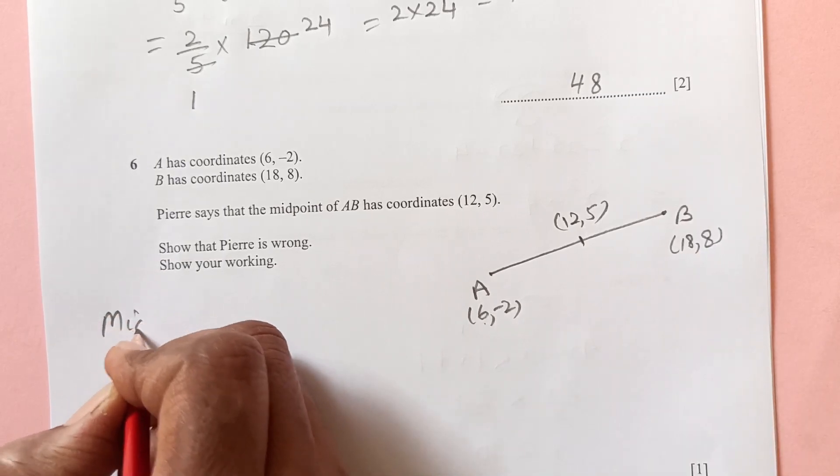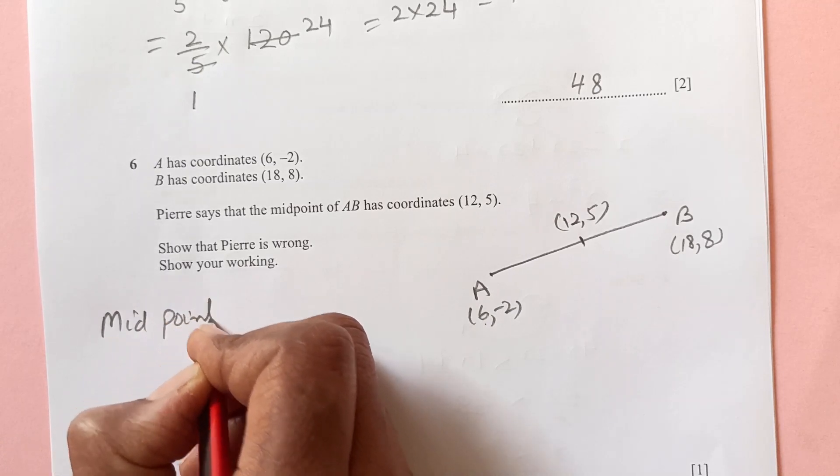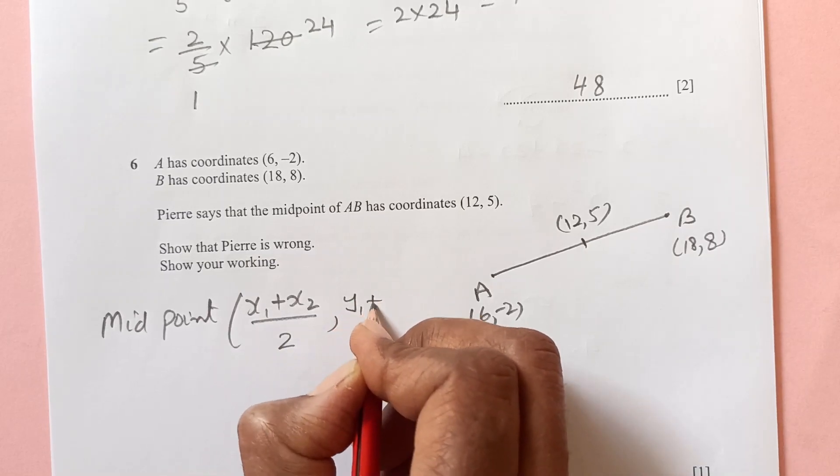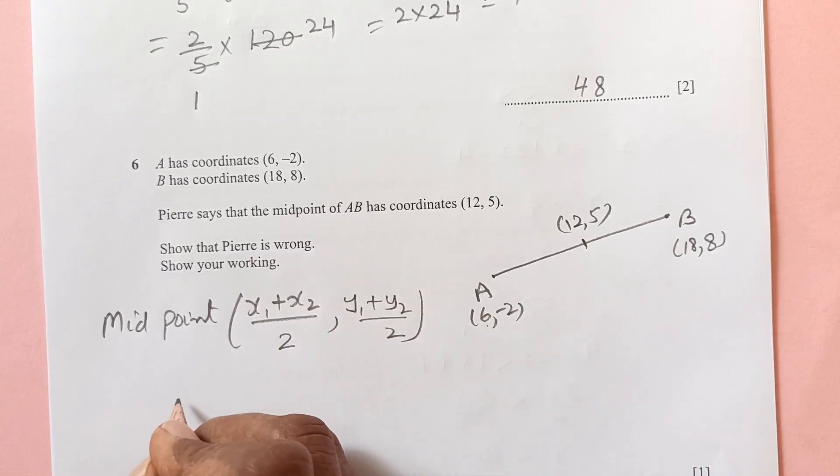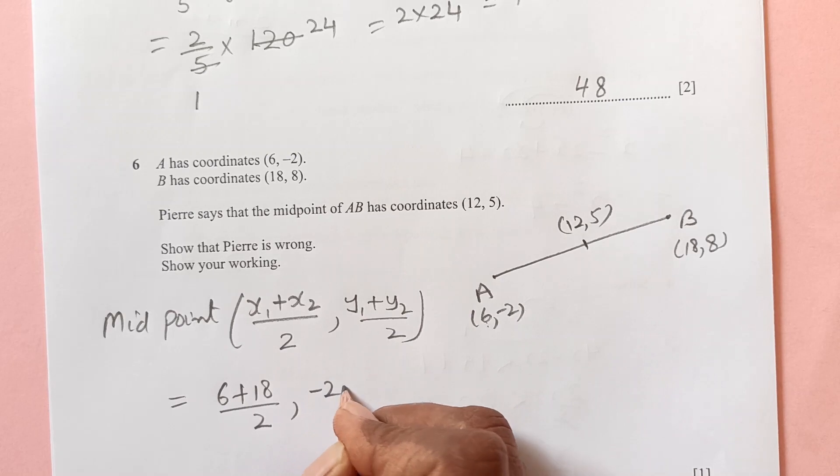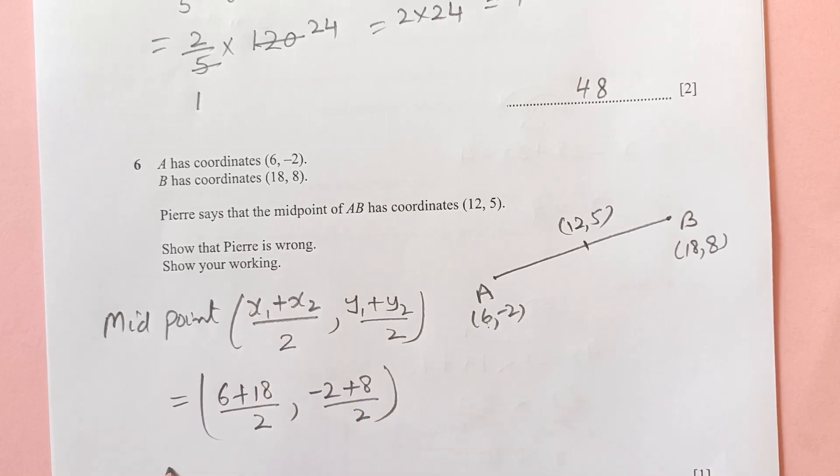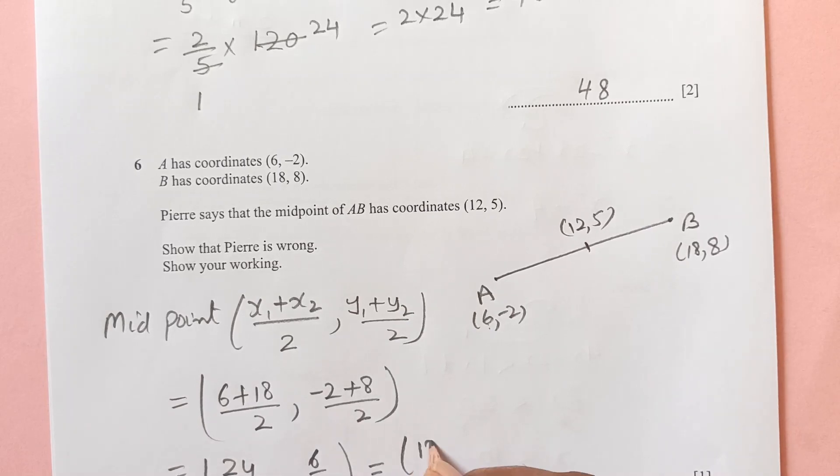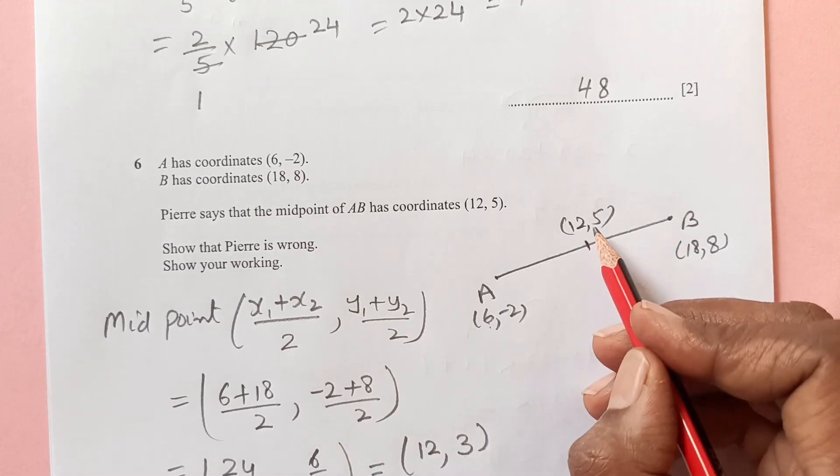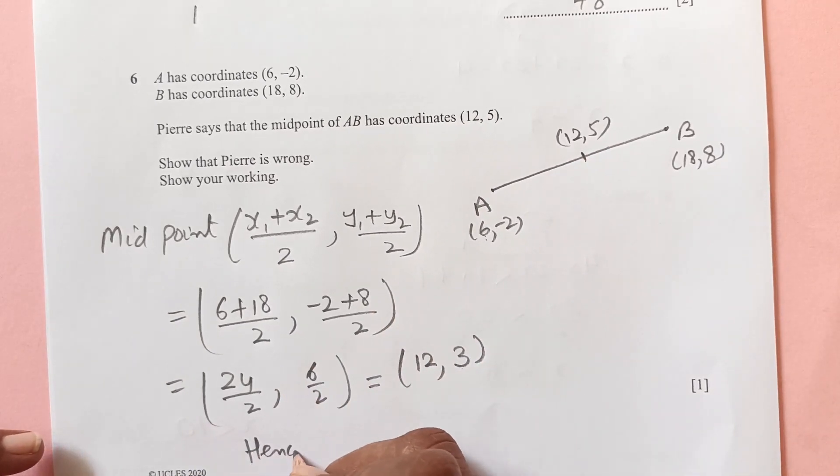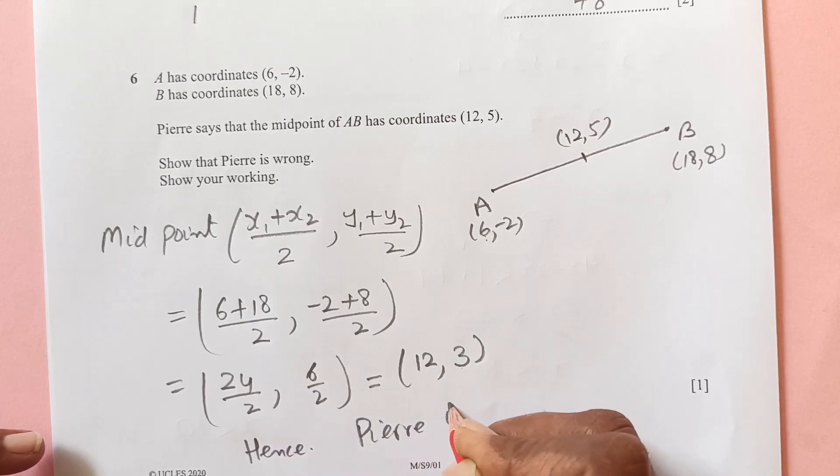x1 plus x2, 6 plus 18 over 2, minus 2 plus 8 over 2. 24 over 2, this is 6 over 2, 12 and 3. You see we got here 12 and 3, but he is saying that it is 12 and 5, so he is wrong. Hence you can say Pierre is wrong.